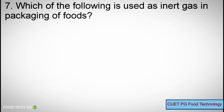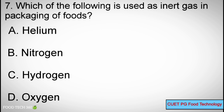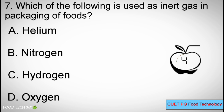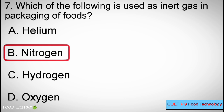Q7. Which of the following is used as inert gas in packaging of foods? A. Helium. B. Nitrogen. C. Hydrogen. D. Oxygen. Correct answer: B. Nitrogen.